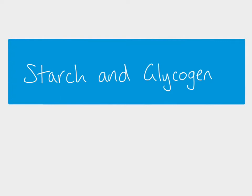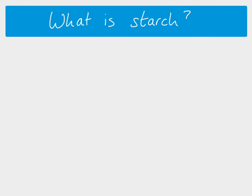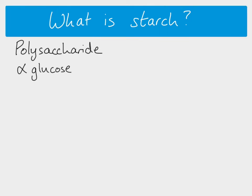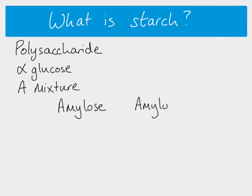In this video we're looking at two polysaccharides: starch and glycogen. Starch is a polysaccharide - a very large molecule made of alpha glucose molecules all bonded together. What people often don't realise is that it's actually a mixture. Starch is made up of two different molecules: amylose and amylopectin.